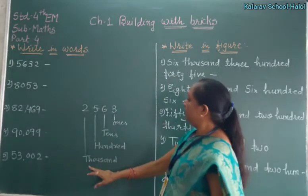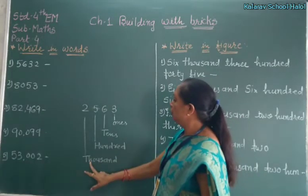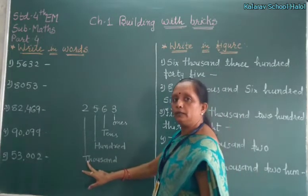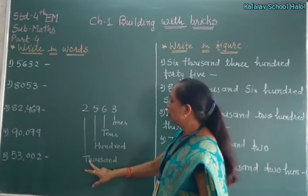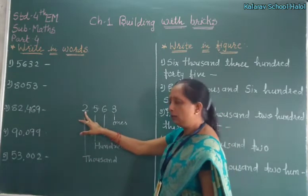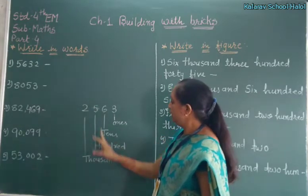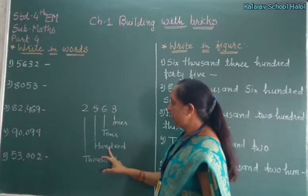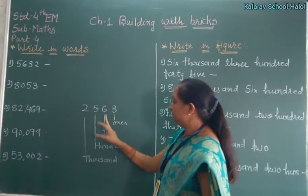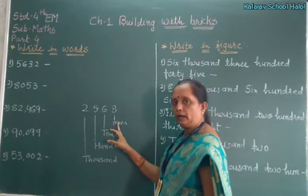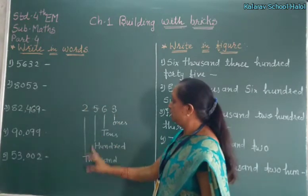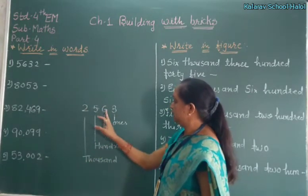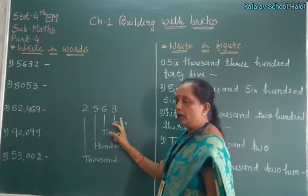So how to write? 2 is in the thousands place. So 2, 5, 6, 3 — how to write? 2, 5, 6, 3. Right?